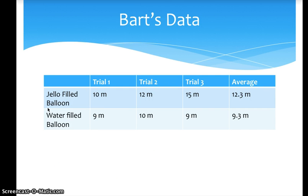Here's an example of Bart's data table. We have trial one, trial two, trial three, and the average — with rows for jello-filled water balloon and water-filled balloon. Trial one: 10 meters vs. 9 meters. Trial two: 12 meters vs. 10 meters. Trial three: 15 meters vs. 9 meters. The average distance the jello-filled balloon traveled was 12.3 meters; the water balloon averaged 9.3 meters.